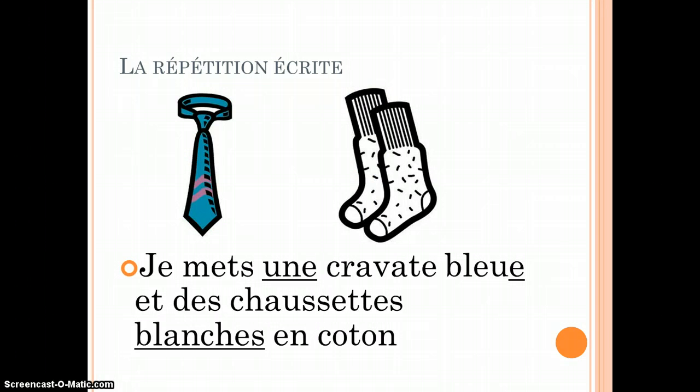Another important item to keep in mind is that your adjectives must agree. So let's look at this sentence. Je mets une cravate bleue et des chaussettes blanches en coton. Notice how I had to add an e to bleu because I'm talking about une cravate, a feminine gendered clothing item. Notice how I also had to change blanc to blanche because I'm talking about another feminine gendered clothing item, socks, which are both in this instance feminine and plural.